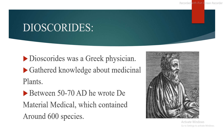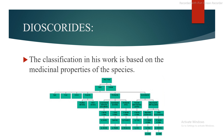Dioscorides was a Greek physician who gathered knowledge about medicine and plants. Between 50 to 70 AD, he wrote De Materia Medica, which contained around 600 species. The classification in his work is based on the medicinal properties of the species.